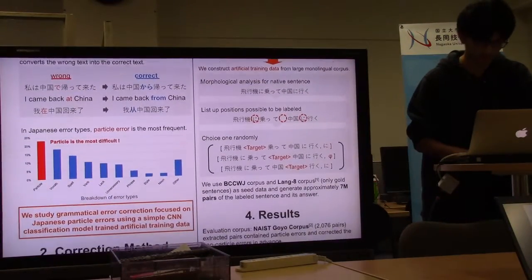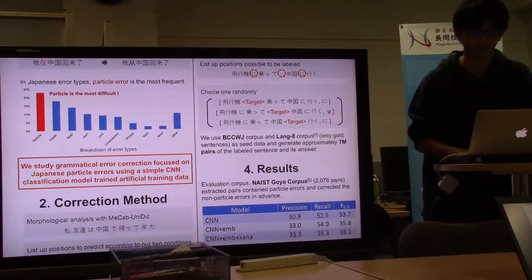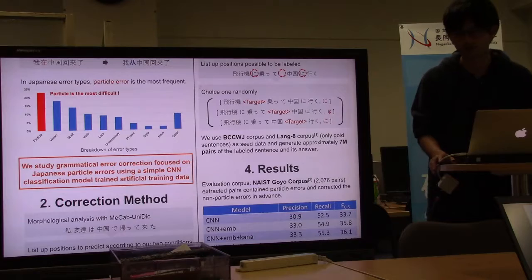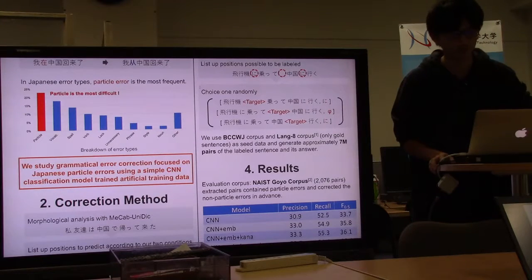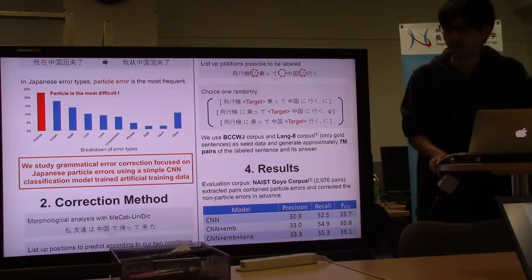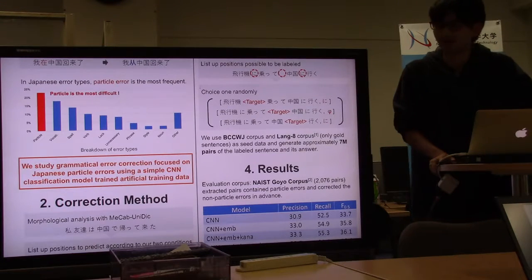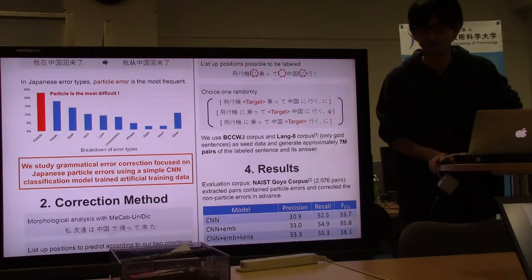In Japanese error types, particle error is the most frequent. Japanese particle is very important grammar, which defines known case or objective case, and so on.